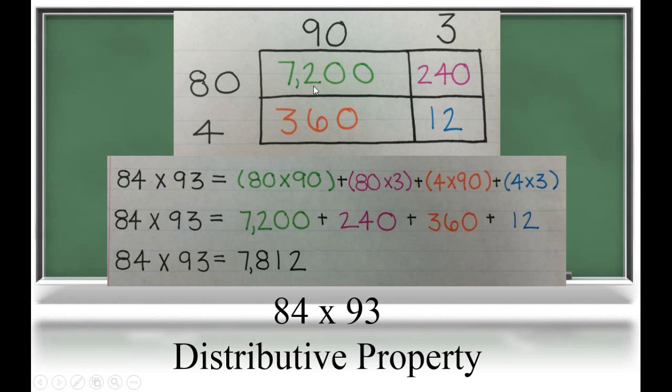This box is 80 times 90, which is 7,200. This box is 80 times 3, which is 240. This box is 4 times 90, and this box is 4 times 3, which is 12. Now because this is the distributive property, students will be required to record their thinking in an expression using parentheses. And you can see we recorded that down here. To get their final product, you just add all of the partial products up for a product of 7,812.